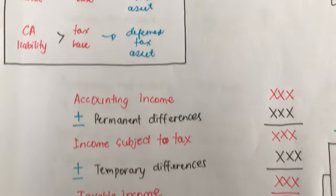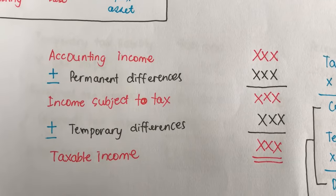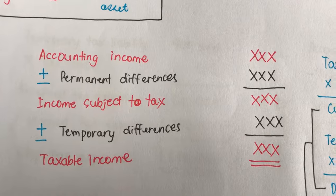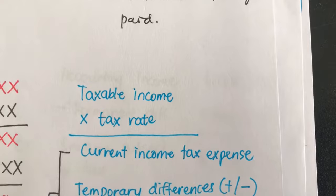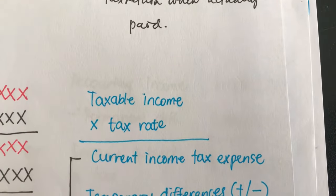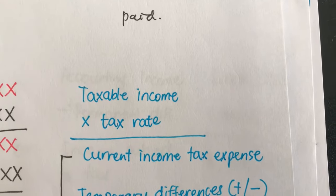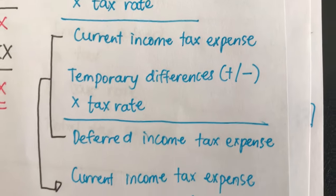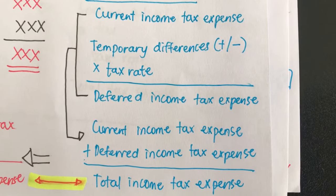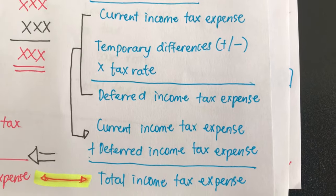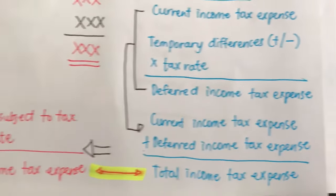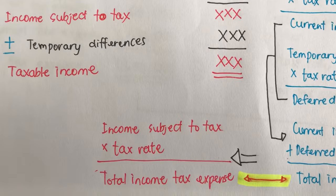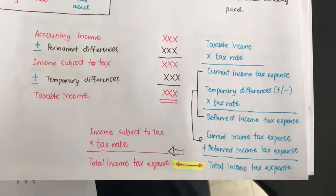For the basic formulas: accounting income plus or minus the effects of permanent differences equals income subject to tax. Plus or minus the effects of temporary differences gives you taxable income. Taxable income multiplied by the tax rate — 30% corporate income tax rate in the Philippines — gives current income tax expense. All temporary differences multiplied by the tax rate gives deferred income tax expense. Current plus deferred income tax expense equals total income tax expense. Alternatively, income subject to tax multiplied by the tax rate also gives total income tax expense directly.